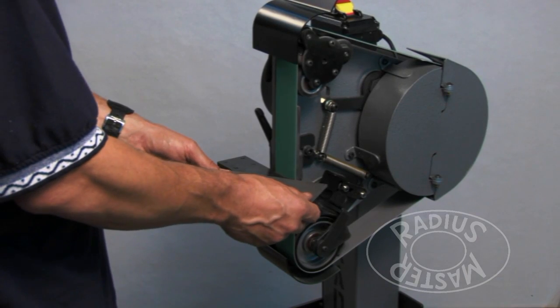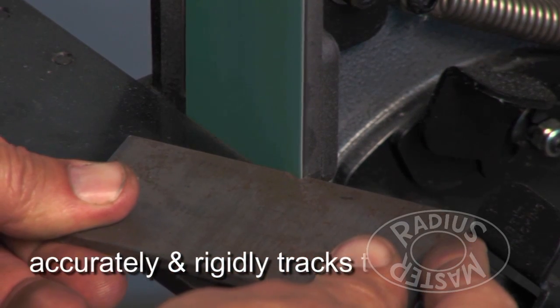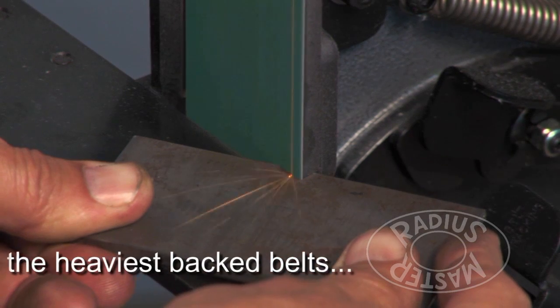Designed to track belts with the heaviest polyester backing, Radius Master's unequalled tracking allows notching and finishing into sharp corners without the belt drifting sideways.